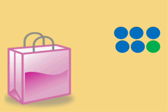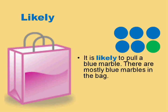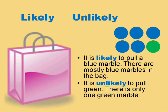Why do I keep pulling blue marbles? Well, I have five blue marbles and only one green, so I'm probably going to pick a blue marble. We say that it's likely that we will pick a blue marble because there are mostly blue marbles in the bag. And we can also say that it's unlikely that we will pick a green marble because there is only one green marble.